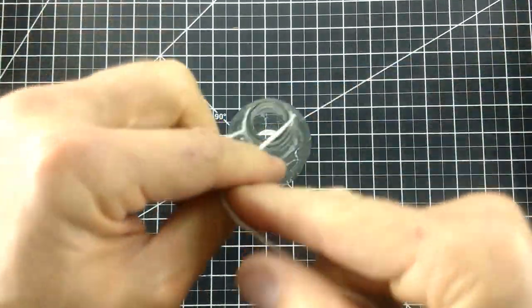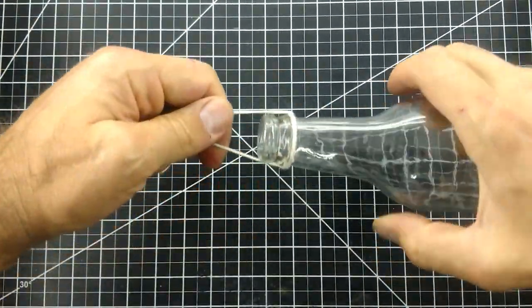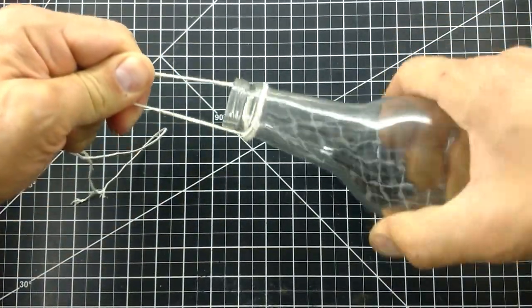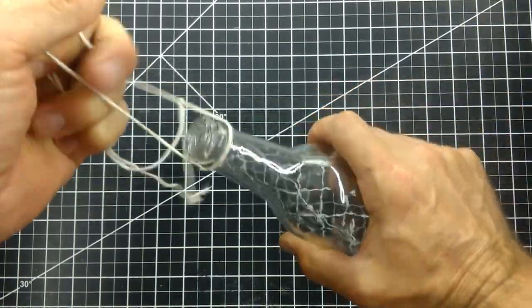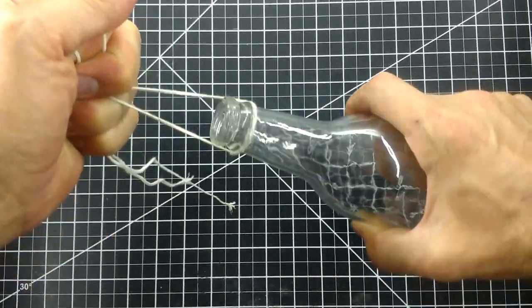Now is a good time to test it. The string can sometimes still be loose at this point, but this time it worked out perfectly. Tugging and pulling and it does not come off.